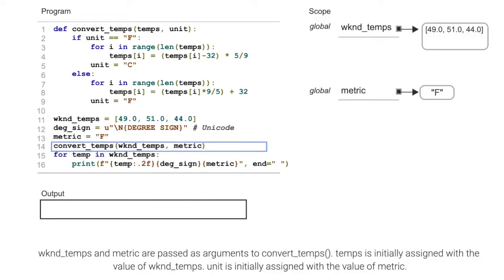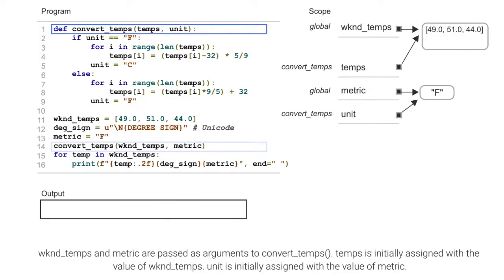Wknd_temps and metric are passed as arguments to convert_temps. Temps is initially assigned with the value of wknd_temps. Unit is initially assigned with the value of metric.